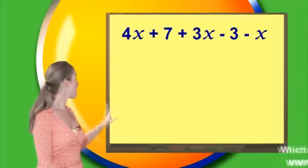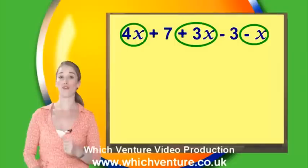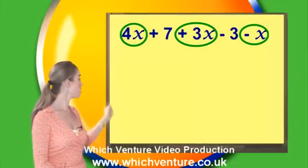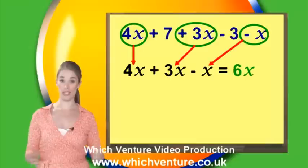Here's what I did. First, I looked at the terms with x in them, which gave 4x plus 3x minus x, which is 6x altogether.